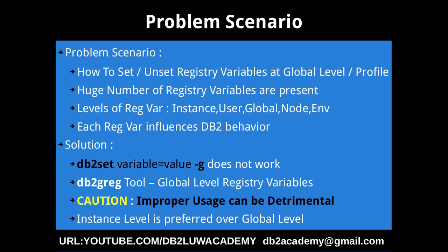This slide talks about the problem scenario and solution. The problem scenario is we want to demonstrate how to set or unset registry variables at the global level or global profile registry variables. There are a huge number of registry variables already present in DB2, and each registry variable will influence the DB2 behavior in one way or the other. There are also different levels at which you can set the same registry variable: instance level, user level, global level — which is what we are going to see in this tip — node level, and environment level. Usually the command to set a registry variable is DB2 set, where you say DB2 set variable equal to value and specify at what level you want to set.